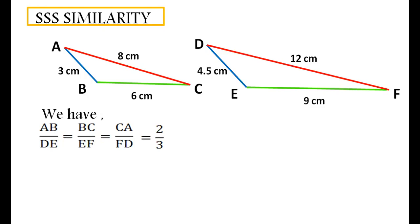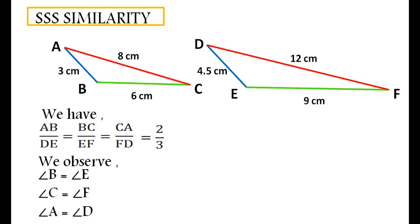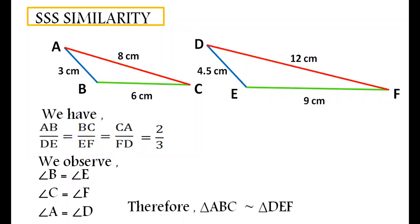If we measure the angles, we observe that angle B is equal to angle E, angle C is equal to angle F, and angle A is equal to angle D. That means, if sides of one triangle are proportional to the sides of the other triangle, then their corresponding angles are equal, and hence the two triangles are similar. Therefore, triangle ABC is similar to triangle DEF by side-side-side similarity.